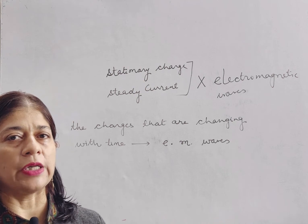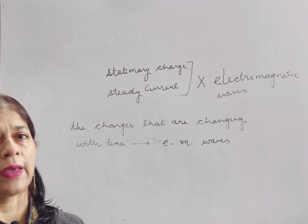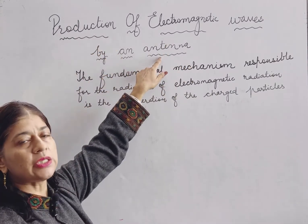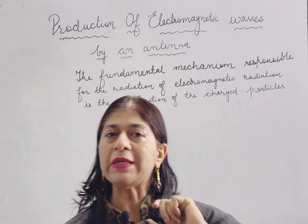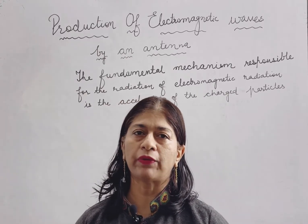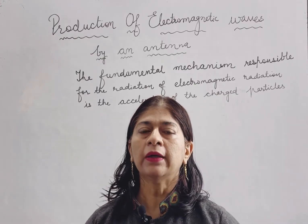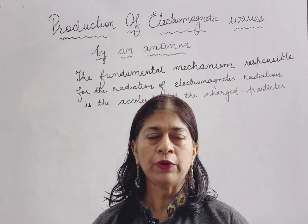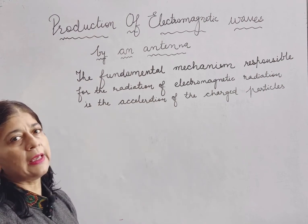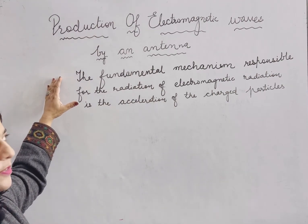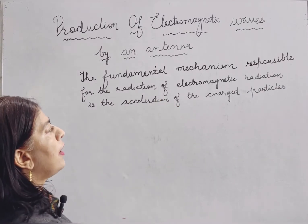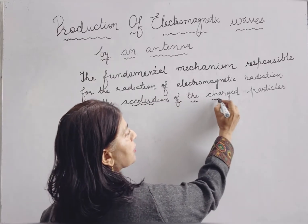Let us see how these accelerating charged particles are going to produce electromagnetic waves. Our today's topic is production of electromagnetic waves by an antenna. An antenna is a piece of conductor. Here we are taking an antenna for producing electromagnetic waves, and the fundamental mechanism responsible for the radiation of electromagnetic radiation is the acceleration of charged particles.